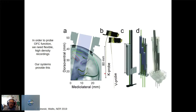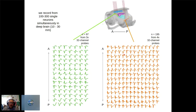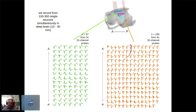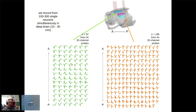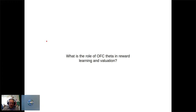This approach lets us record from between 100 and 300 neurons per day, even at deep structures. For example, I'm running three probes in OFC and four probes in hippocampus simultaneously, getting about 300 neurons in a single recording session. This gives us large populations for higher-level population analyses at single-trial resolution.